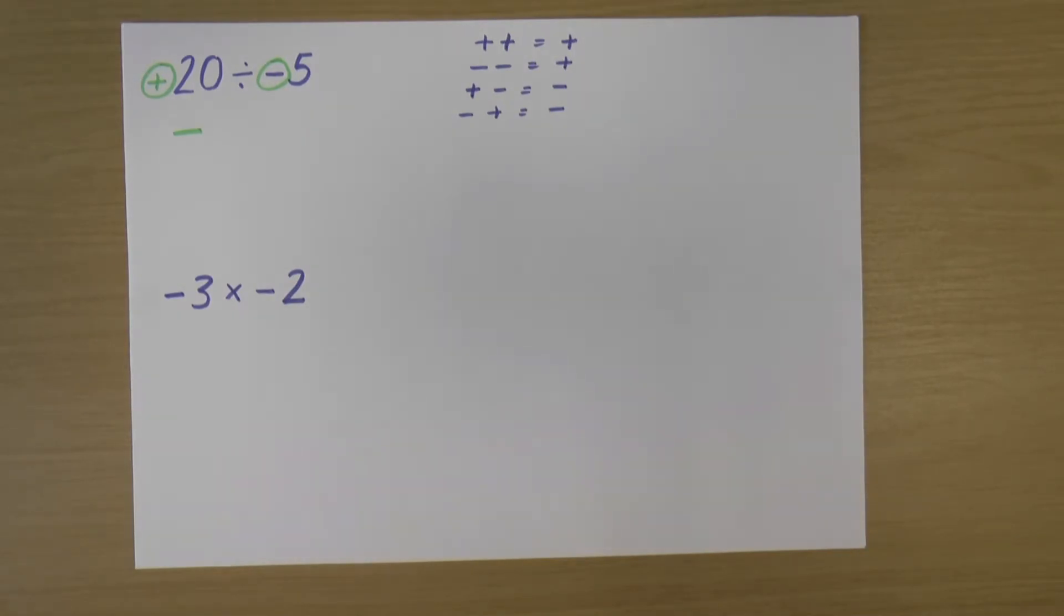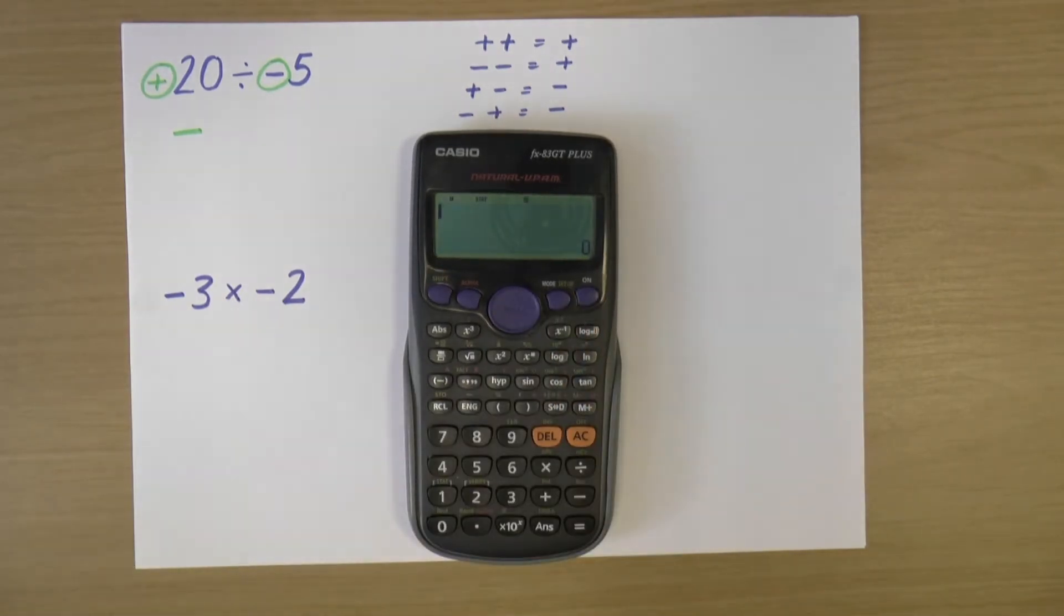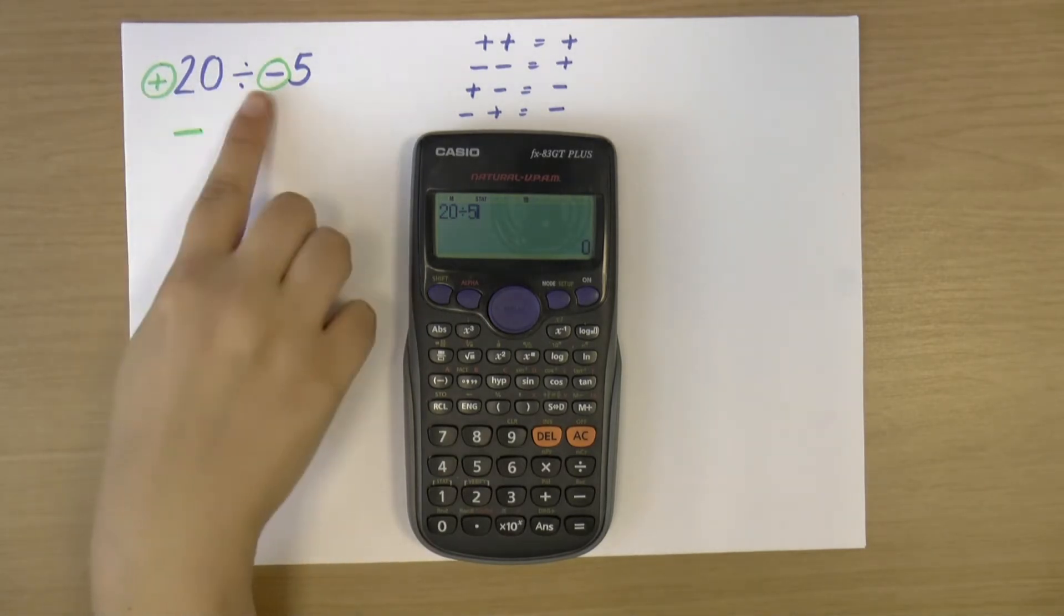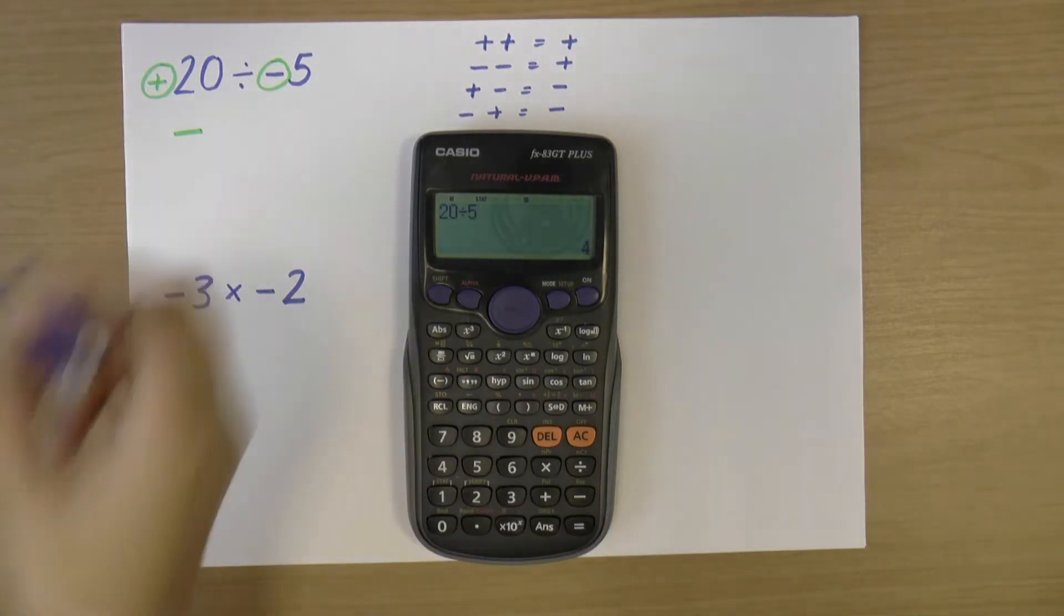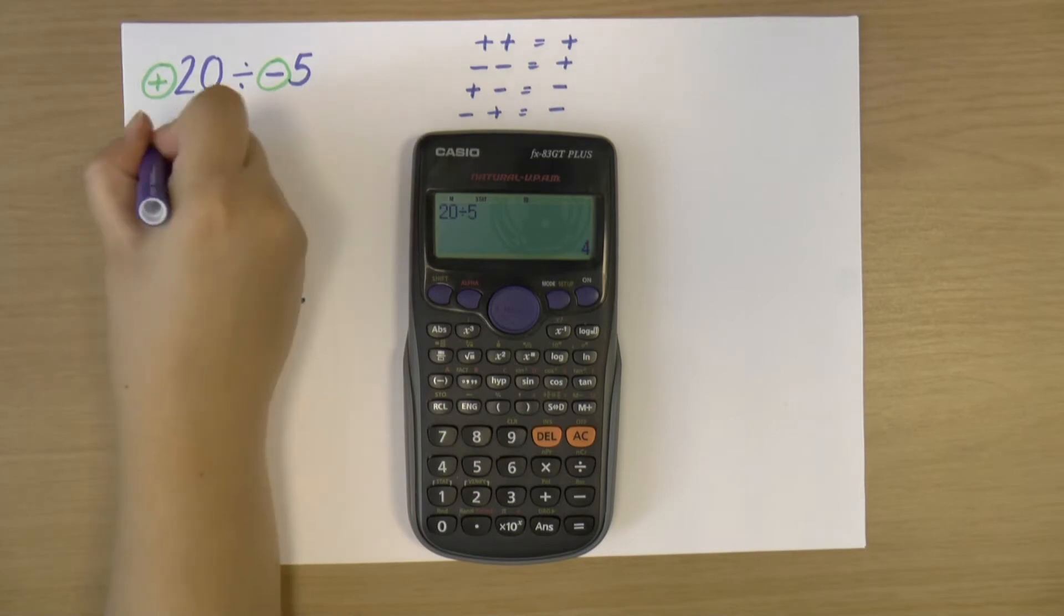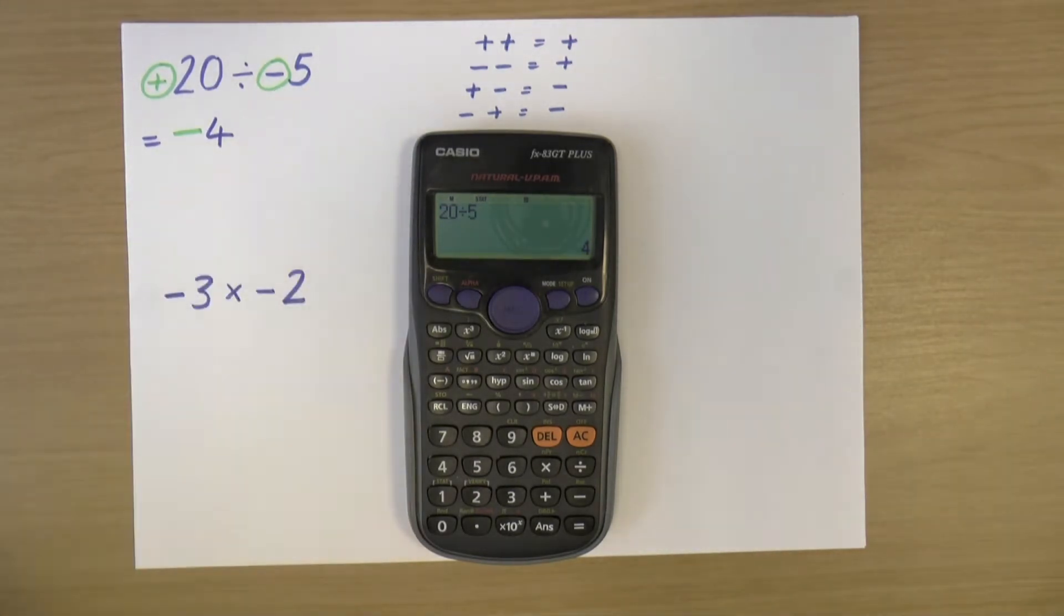And what I do then is I just do the sum ignoring the signs. So grab my calculator and you can do this on a calculator or you can do it in your head, whatever you like. But we've got 20 divided by five. And so I'm not putting in the symbols because I've already decided what my symbol is going to be for my answer. So 20 divided by five. And that gives me an answer of four. So my overall answer is negative four.